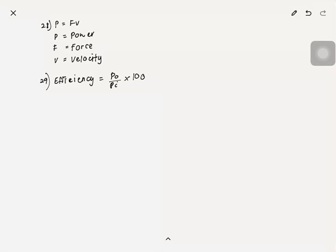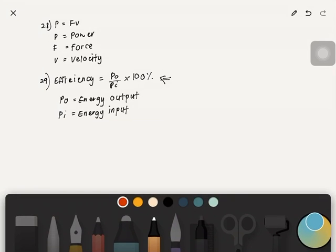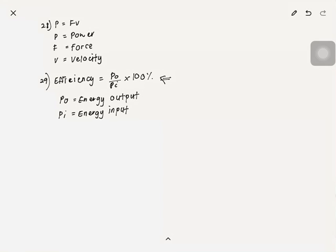Efficiency = P_output / P_input × 100%. P_O is energy output and P_I is energy input. Efficiency is rarely 100% because energy is lost. This formula is used to find out how efficient something is.